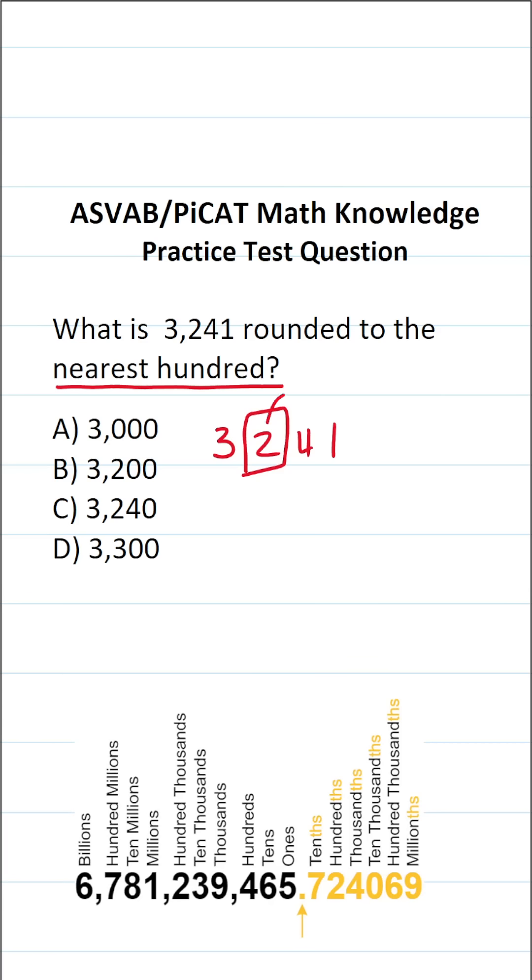And the way rounding works is you look to the number that's to the right. If that number is 5 or more, you round up. If it's less than 5, you keep the number the same.